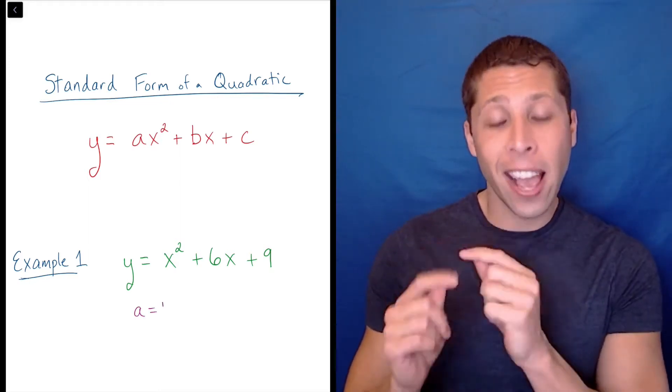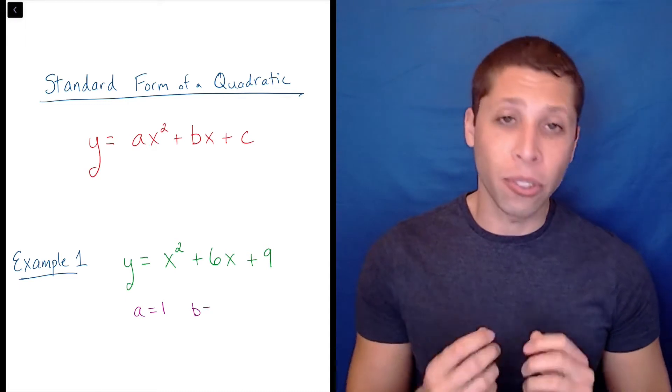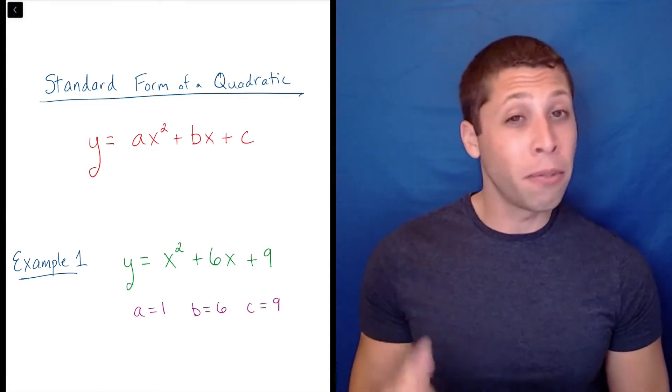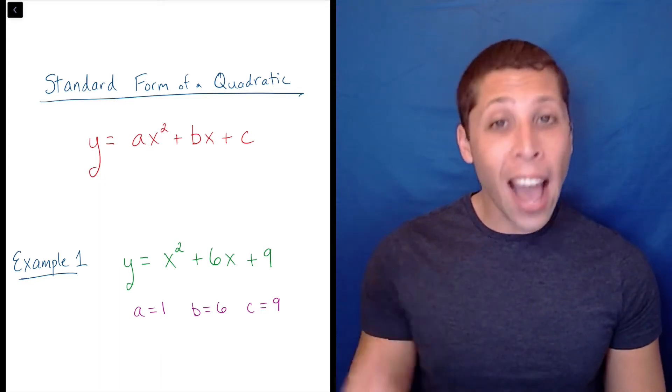In this case, a equals 1, b equals 6, and c equals 9. Remember that if there's no number in front of a variable, then we know that the actual number is 1, so that's why a equals 1.